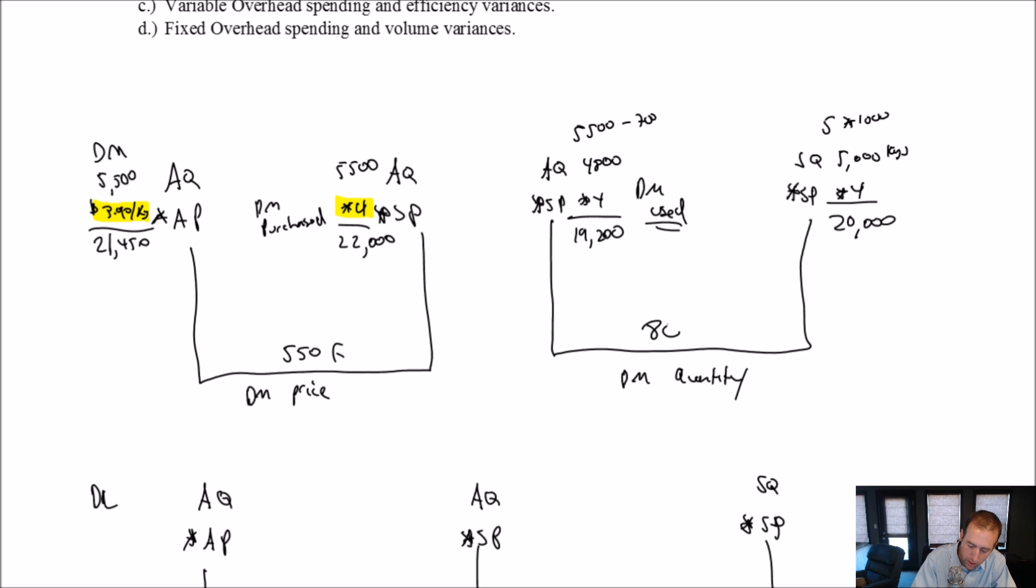5 kilograms of material, and we made 1,000 buckets. It should take 5,000 kilograms. 5,000 times 4 is $20,000. Our difference here is $800, and we again look at what's different between the calculations. 4 and 4 are the same, but 4,800 and 5,000 are different. We actually used 4,800 kilograms. We should have used 5,000 based on our standard. We used fewer kilograms than we'd expect. This is favorable. We were very efficient here.